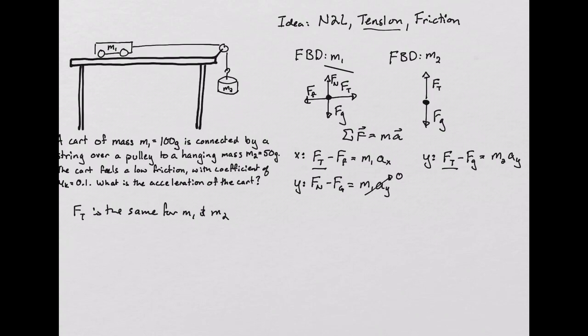Second, because this string keeps the distance between m1 and m2 the same, the length of the string stays the same, then not only must their positions be related, but their velocities and furthermore their accelerations must be related as well. What that's going to say is that the acceleration in the x direction and the negative acceleration in the y direction must be the same. I'm going to write that down as Ax is going to be equal to minus Ay is going to be equal to simply A.